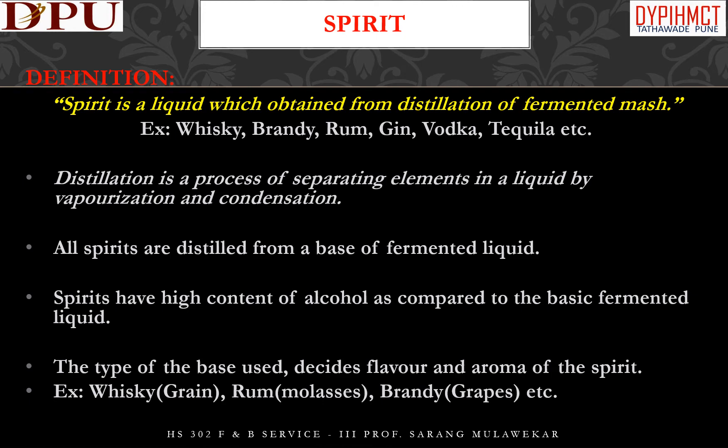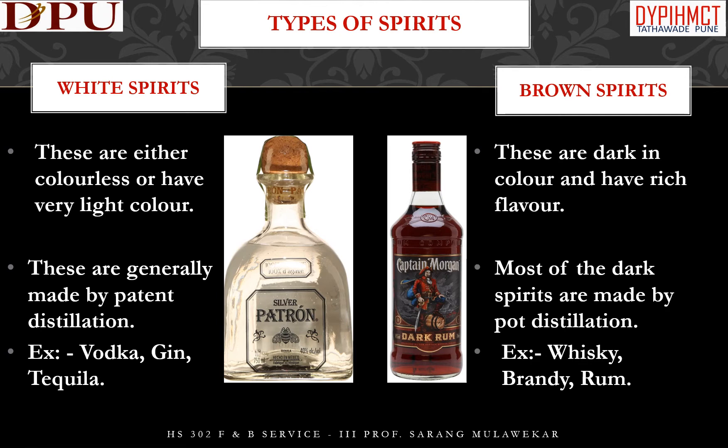Depending upon color and aroma, spirits are classified as white spirits and brown spirits. White spirits are either colorless or have very light color. These are generally made by patent distillation and matured in stainless steel tanks, where they do not absorb color from the metal. Examples of white spirits are vodka, gin, and tequila. White spirits have very delicate aromas and flavors.